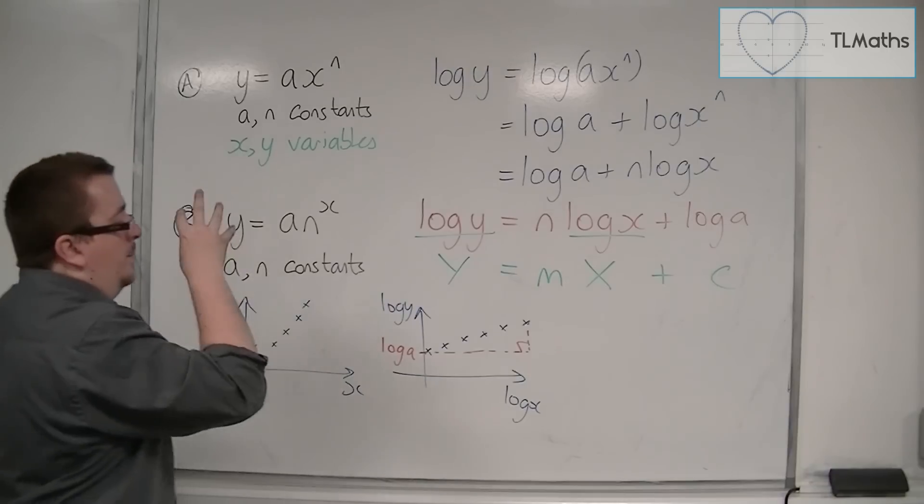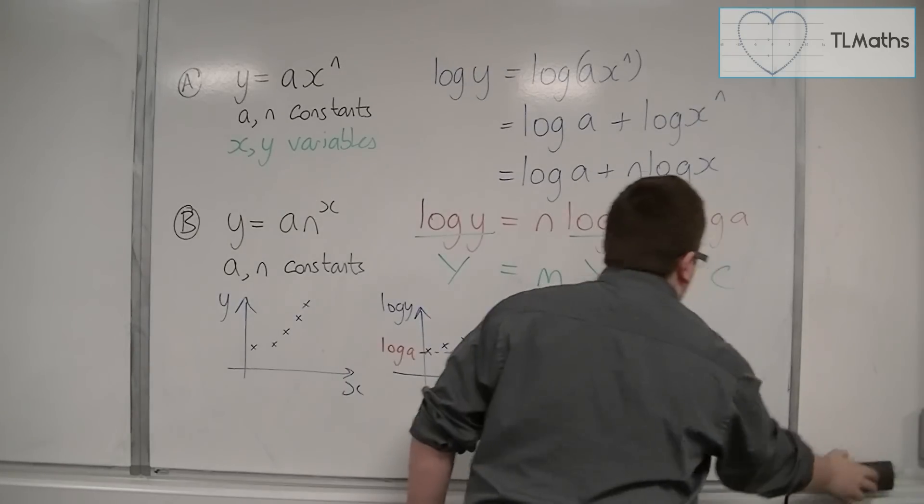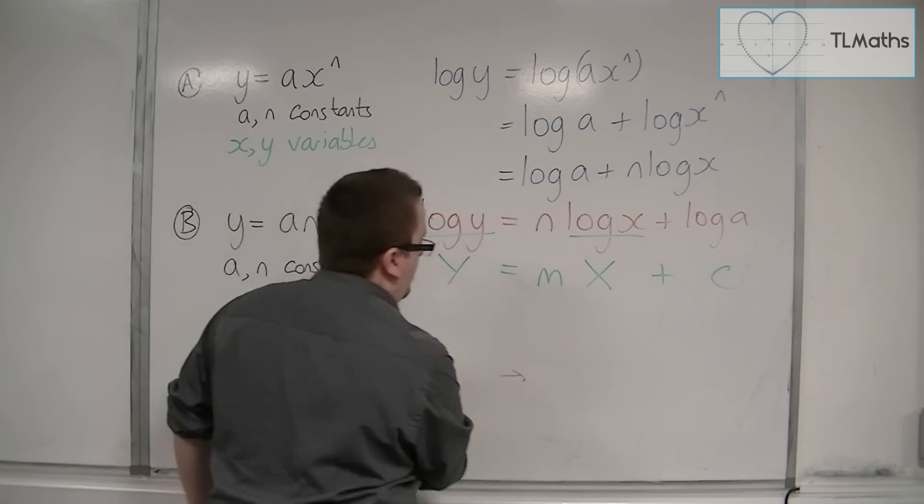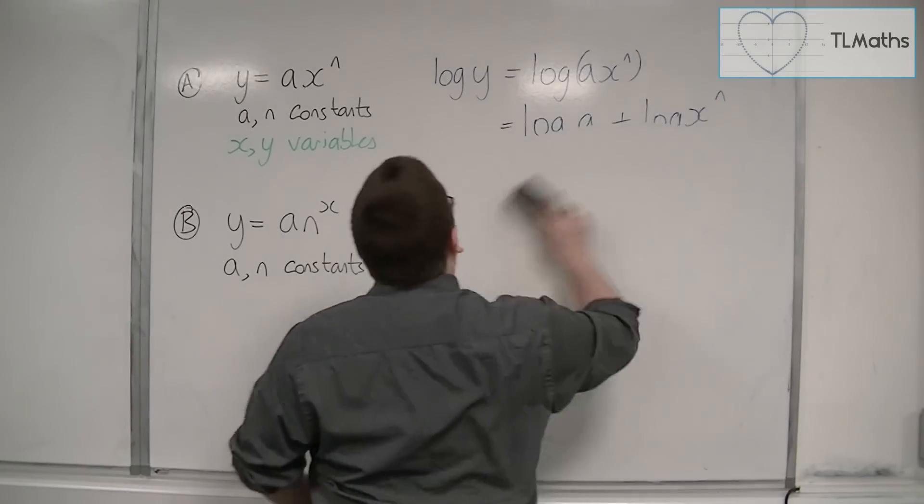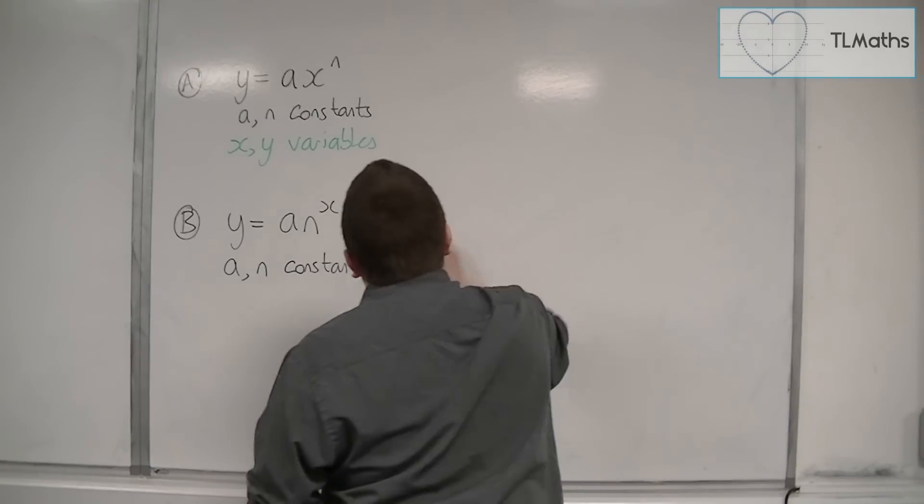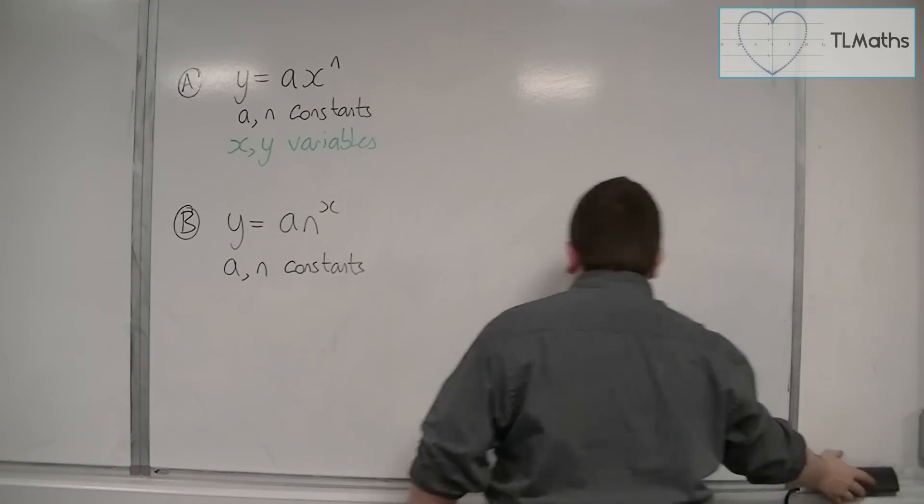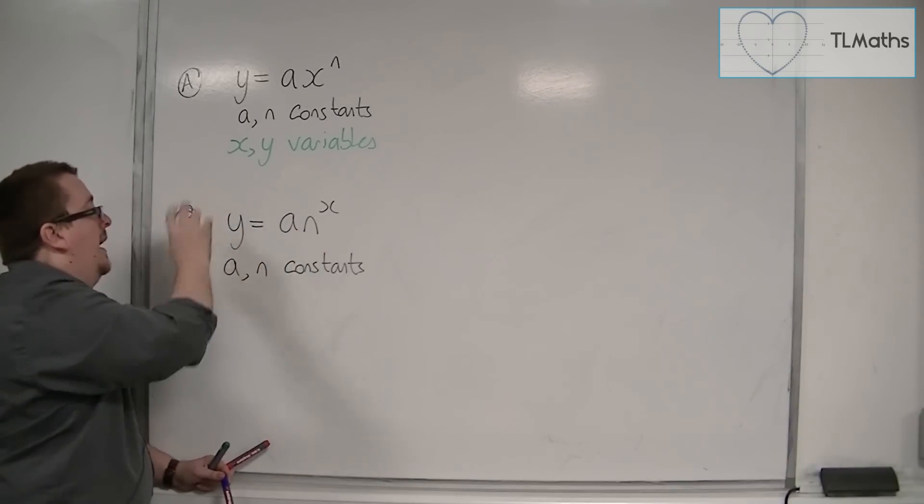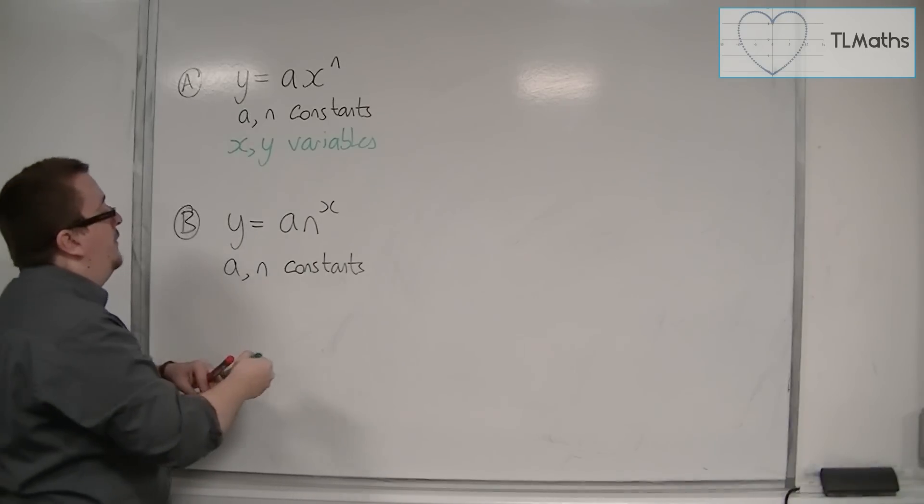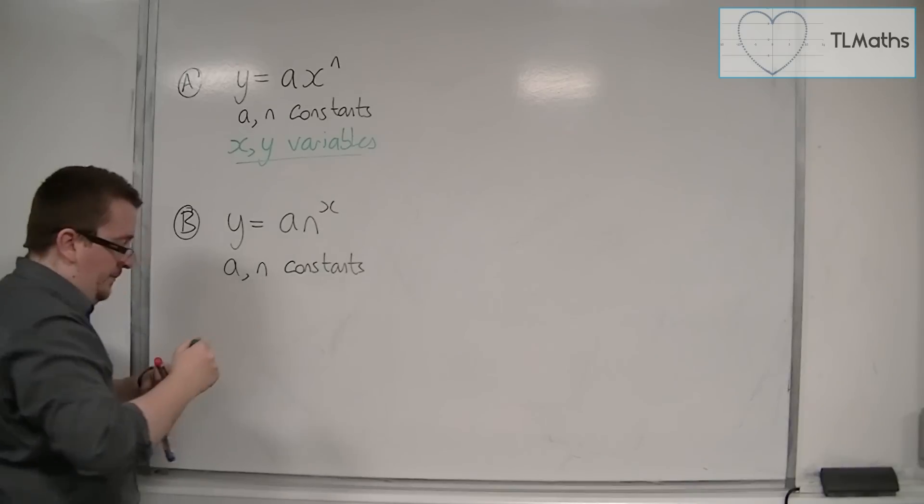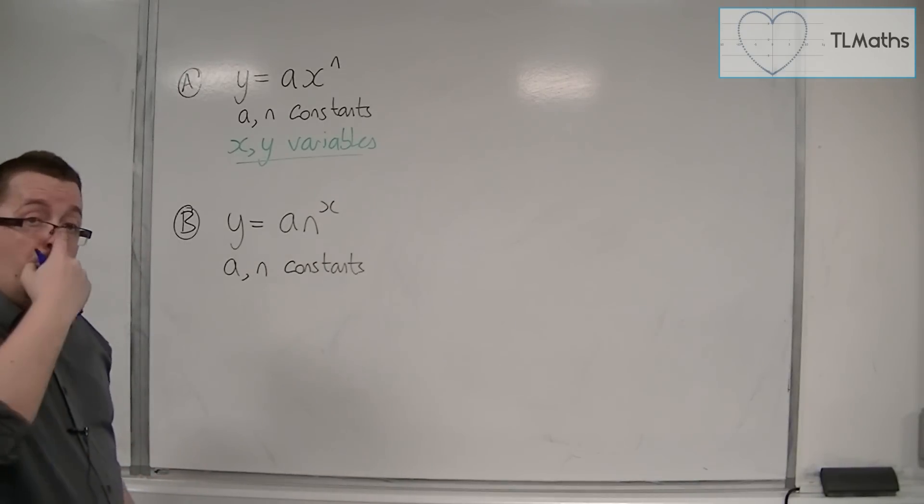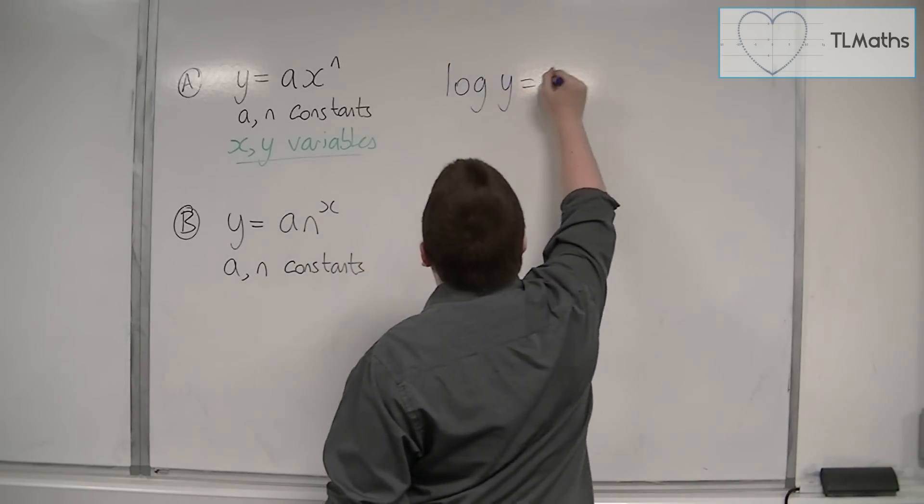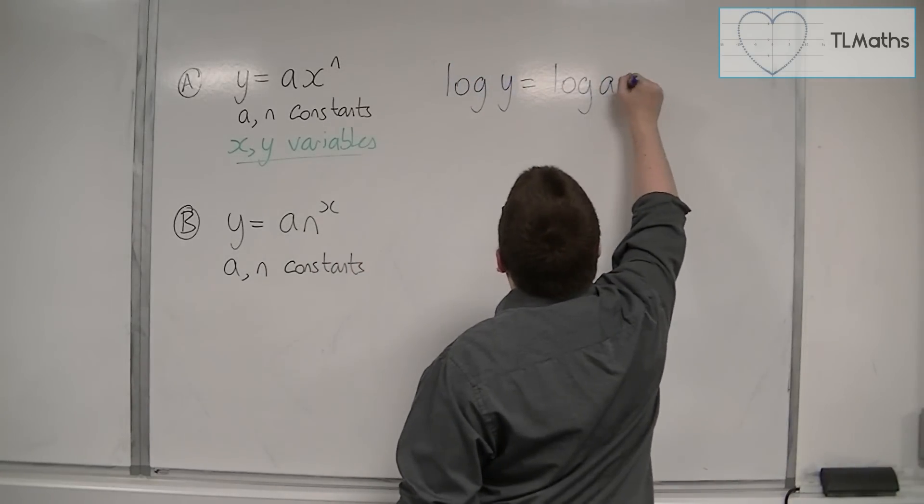Let's have a look at b now, just so that we can see how this is going to work in another case. I'm going to do this in a very similar way. This time, we've got y is equal to an to the x. a and n are constants, x and y are still the variables. So I'm going to log both sides first. So log of y is equal to log of an to the x.